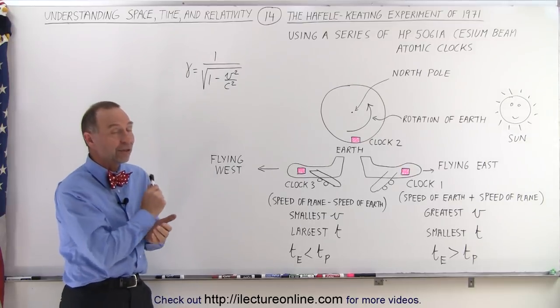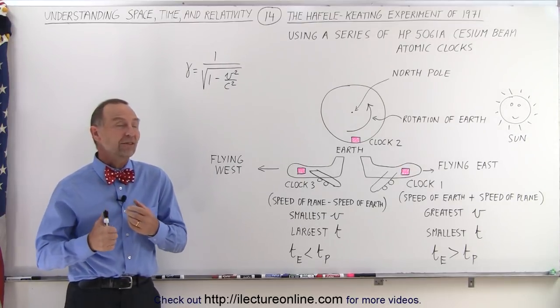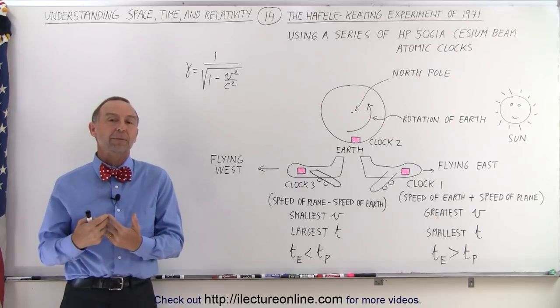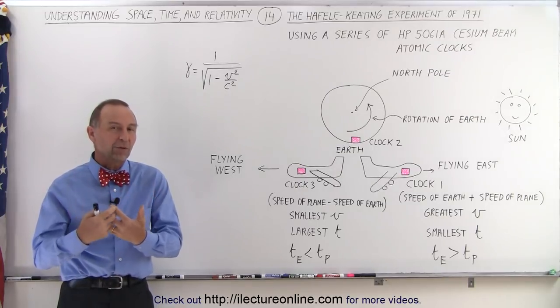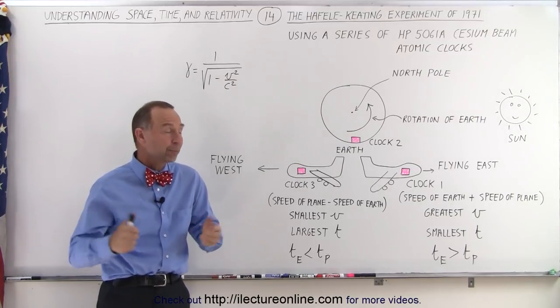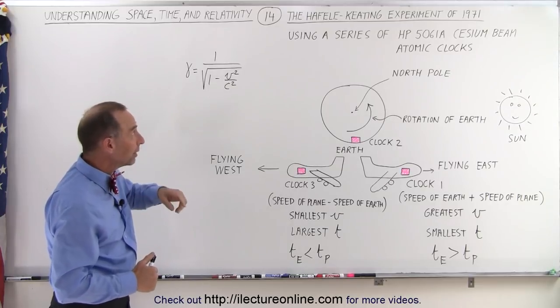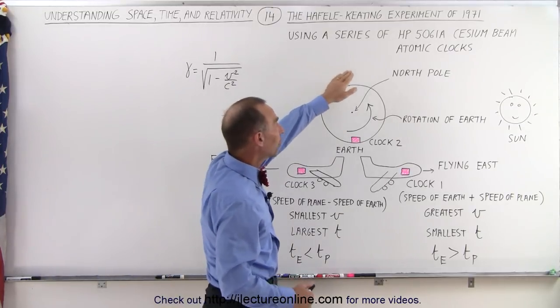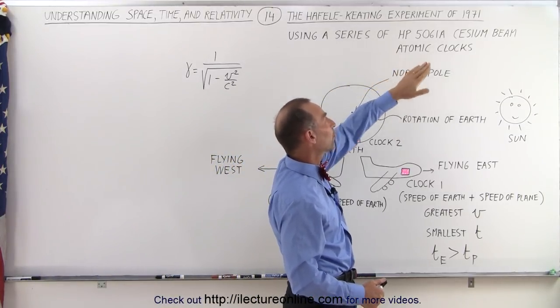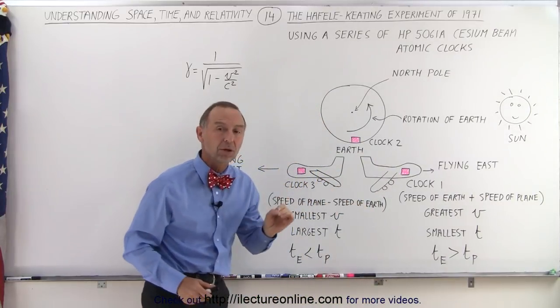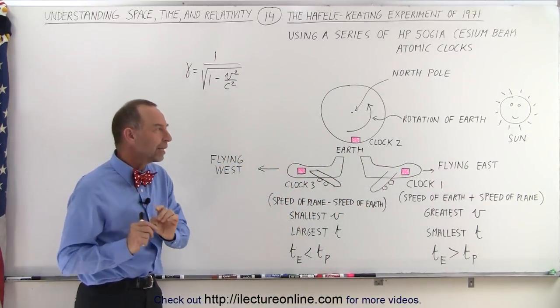It turned out in 1971 a few scientists, Hafele and Keating, put together an experiment to prove it was correct. And they did prove it. How was it done? Well, they used a series of HP 5061A cesium beam atomic clocks. They had 12 of them, I believe.